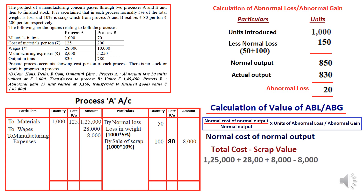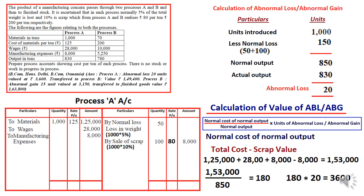Normal cost of normal output = Total cost minus scrap value. Total cost: ₹1,25,000 + ₹28,000 + ₹8,000 = ₹1,61,000 minus scrap value ₹8,000 = ₹1,53,000. Applying the formula: ₹1,53,000 ÷ 850 = ₹180 per unit. Total value of abnormal loss: 20 units × ₹180 = ₹3,600. This abnormal loss is credited in the process account — 20 units at ₹180, total ₹3,600.